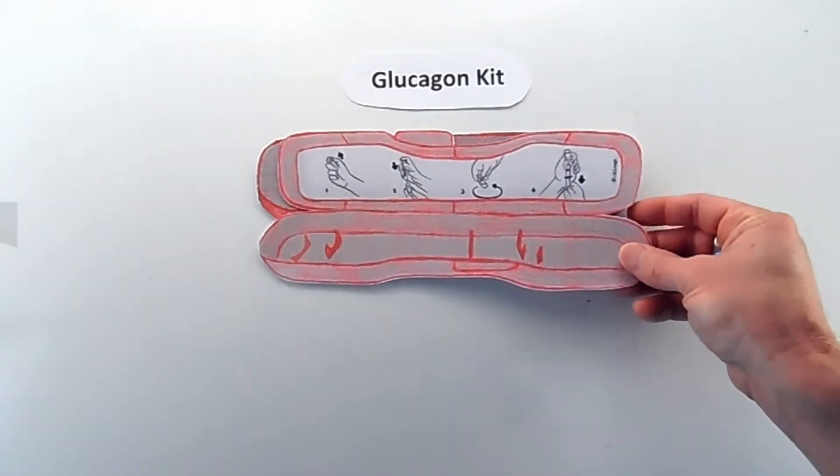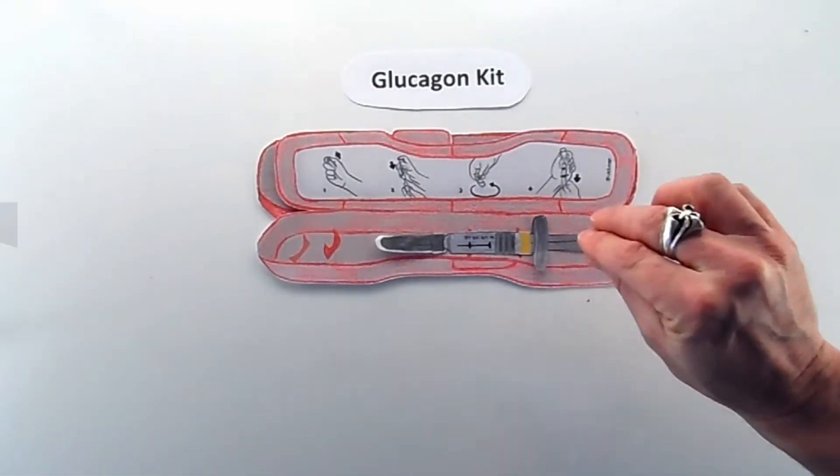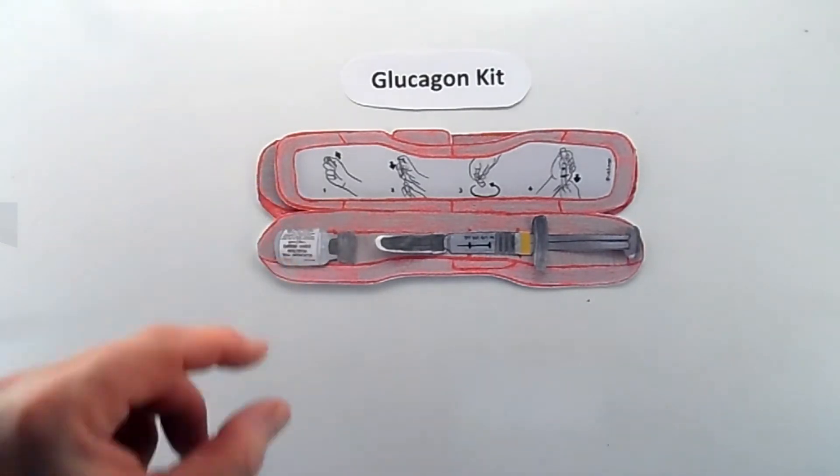Once you've got it, opening your glucagon kit, you will see a syringe filled with a clear liquid solution and a vial with a powder in it.